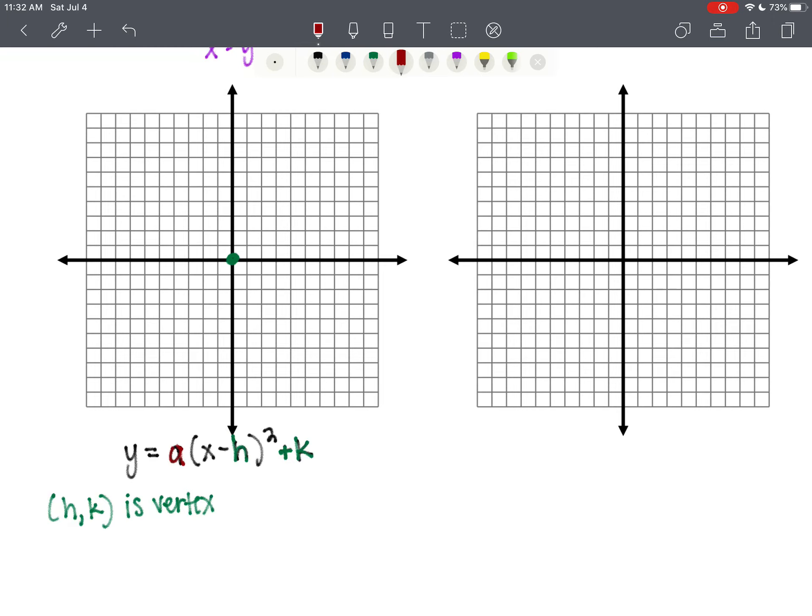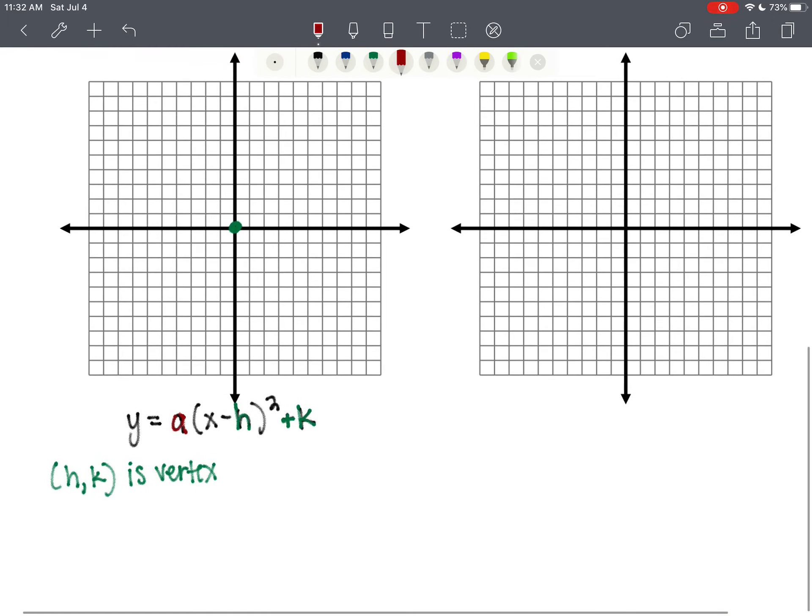And a determines whether or not our parabola opens up or down. So when a is positive, the parabola opens up. And when a is negative, the parabola opens down.